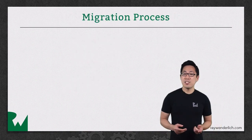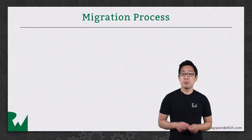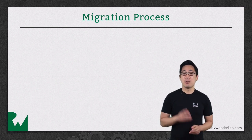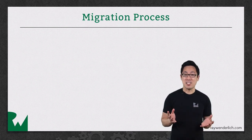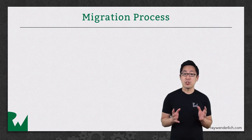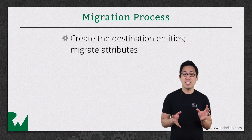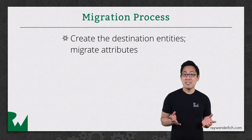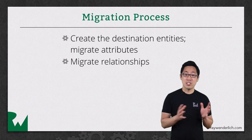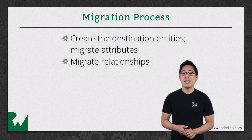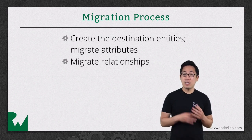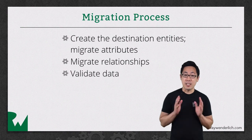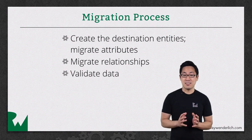There are three stages of the migration process. First, Core Data sets up two managed object contexts — one for the source and one for the destination. The first stage is to create those destination entities and move the attribute data over. When all the entities and attributes are in place, the second stage is to move the relationships over. The final stage is to run all validations and ensure the data store is in a consistent state.